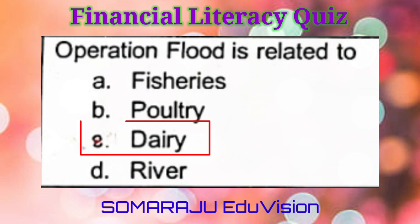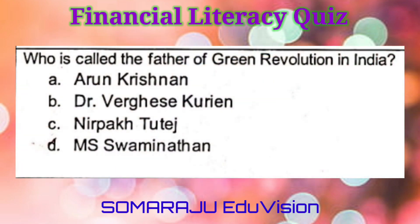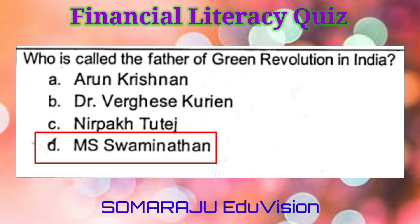Question number nine: Who is called the father of Green Revolution in India? A. Adhan Krishnan, B. Dr. Verghese Kurian, C. Nirpak Tutage, D. MS Swaminathan. The correct answer is D. MS Swaminathan.